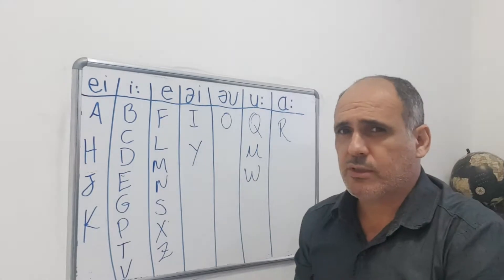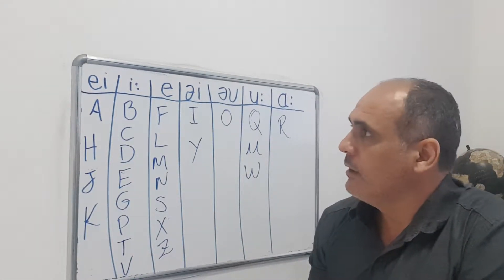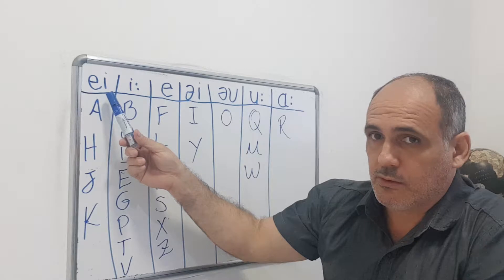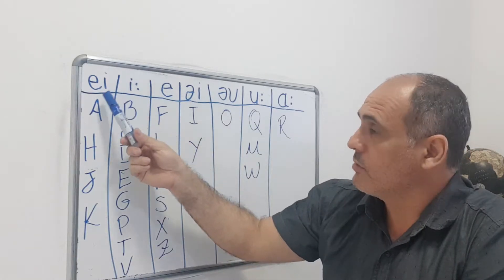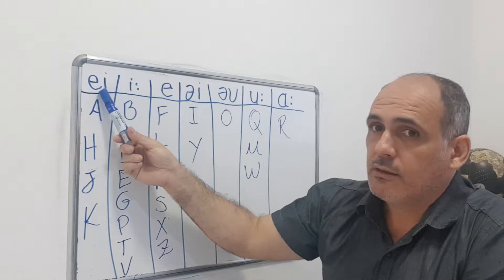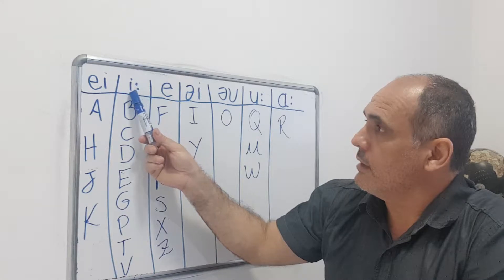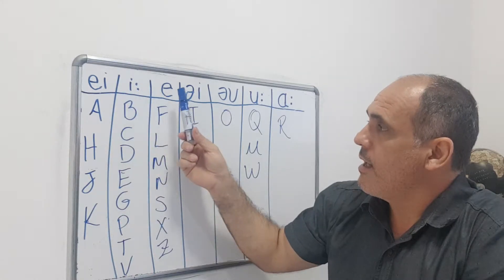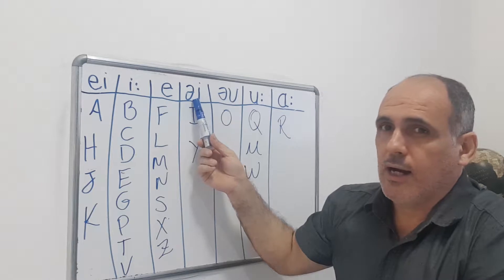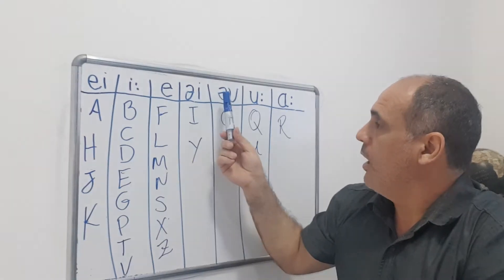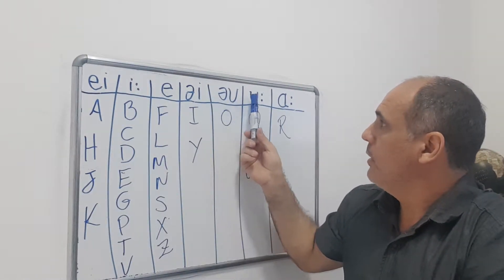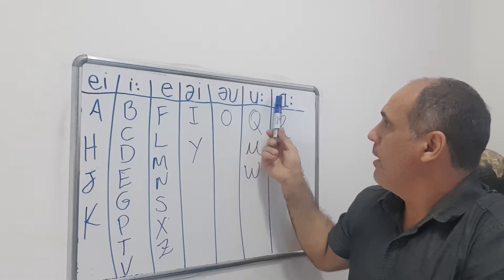So today we are going to study the letters of the alphabet. First we have the sounds, primeiros sons: A, E, I, O, U, A.